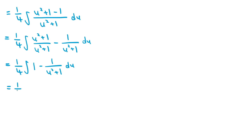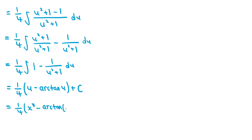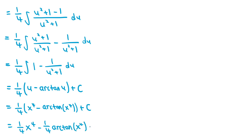There's also a constant of 1 over 4 at the front, so this becomes 1 fourth times u minus arctan of u plus some constant c. Since we previously substituted u equals x to the 4, this just becomes 1 fourth times x to the 4th minus arctan of x to the 4th plus some constant c. Distributing, we can rewrite this as 1 fourth times x to the 4 minus 1 fourth times arctan of x to the 4, plus c.